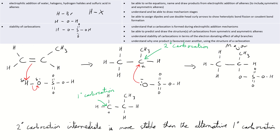We've now looked at symmetric and asymmetric alkenes, drawn mechanism stages, assigned dipoles based on electronegativity difference, and used double-headed curly arrows. A carbocation is always formed at the intermediate stage — primary, secondary, or tertiary. Carbocation stability matters only for asymmetric alkenes. Tertiary is more stable than secondary, which is more stable than primary: go for the higher number for the major product and the lower number for the minor product.